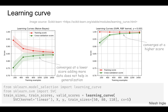In these two plots, on the left hand side, as the number of training samples increases, the training score starts to drop and the validation score starts to increase, and they converge at a score of around 0.85.